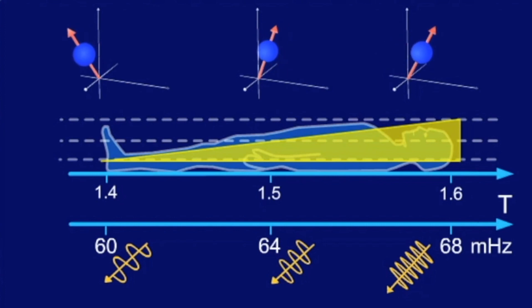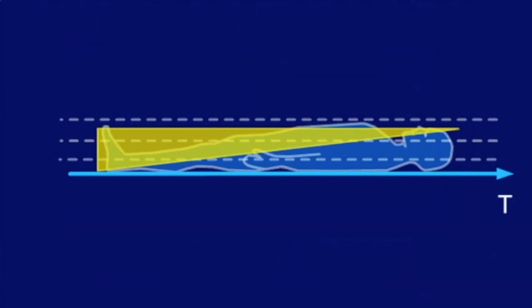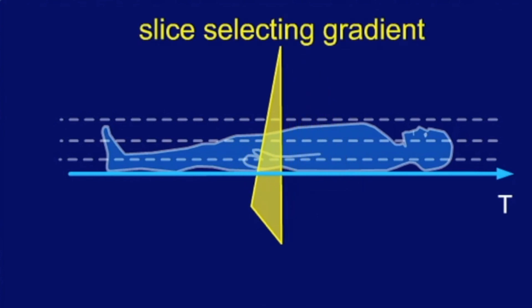As gradient fields can be superimposed in any direction, it's possible to define not only transversal slices, but all kinds of different imaging planes without moving the patient. The gradient field that enables us to examine a specific slice is also called slice-selecting gradient.